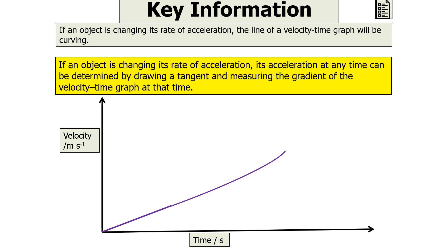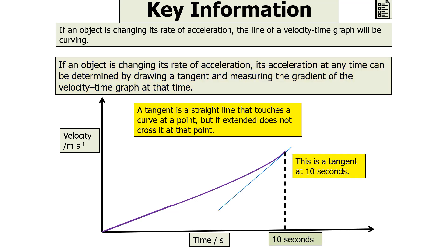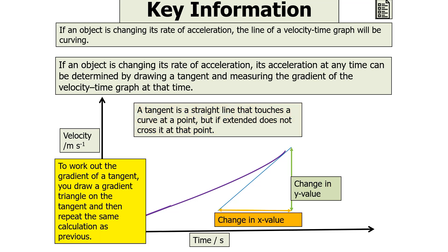If an object is changing its rate of acceleration, its acceleration at any time can be determined by drawing a tangent and measuring the gradient of the velocity time graph at that time. A tangent is a straight line that touches the curve at a point but, if extended, does not cross it at that point. You draw your tangent, then work out its gradient by drawing a gradient triangle on the tangent and repeating the same calculation as before.